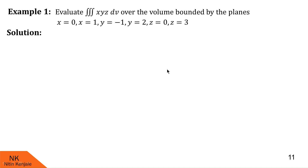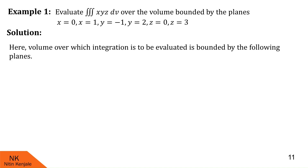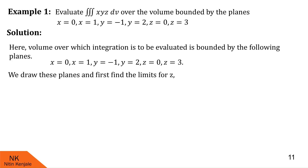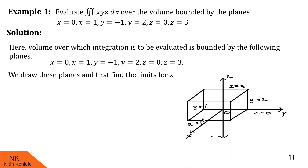Let us see its solution. First of all, we note down the planes which bound the volume of integration. Here, that volume is bounded by x=0, x=1, y=−1, y=2, z=0, and z=3. Next we draw these planes. x=0 means the yz-plane — the y-axis and z-axis together form the plane x=0. Then x=1 is the plane passing through x=1 and parallel to the yz-plane.